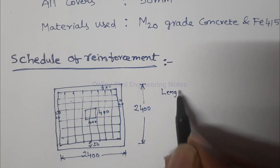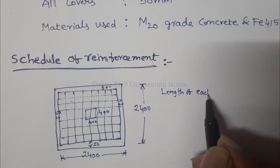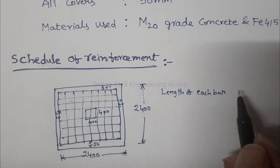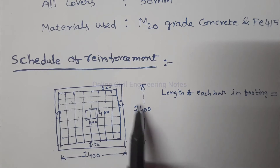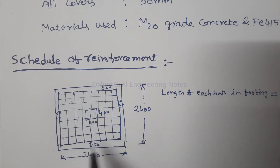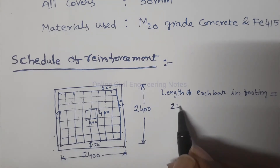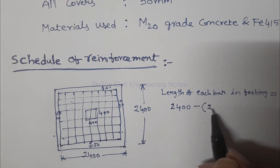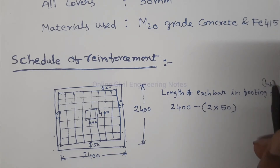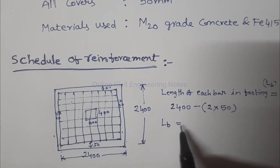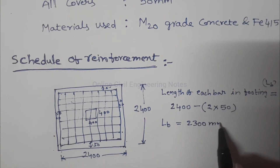Length of each bar: since it is a square footing, all sides are equal at 2400 mm. Length of each bar equals 2400 minus 2 times the end cover, which is 2400 minus 2 into 50, equal to 2300 mm.